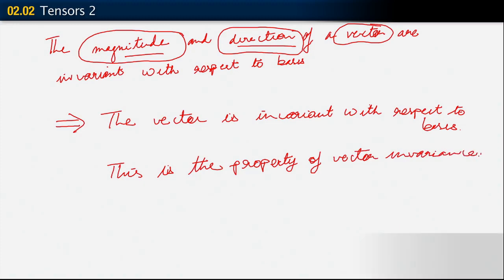It doesn't matter how we look at this vector — whether we look at it with respect to this basis or a different basis, the vector is the same. The magnitude of the vector and the direction in which it is pointing remain the same regardless of what basis we want to express its components in. This is essentially the property of vector invariance.